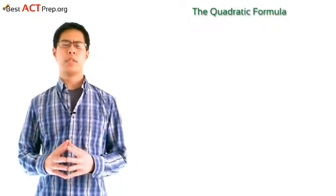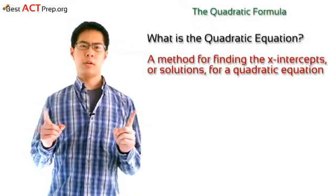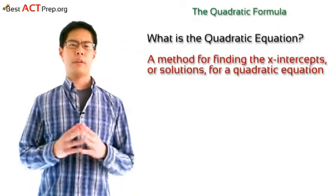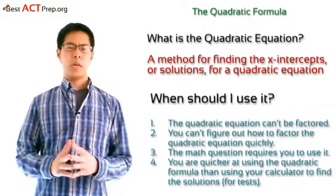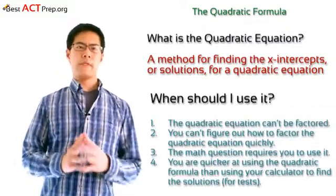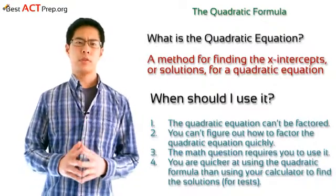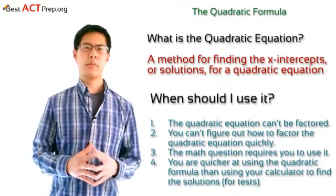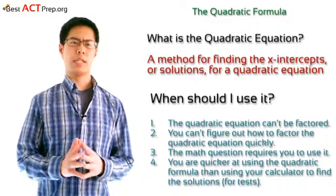So first, what is the quadratic formula and when should I use it? In short, the quadratic formula is a method for finding the x-intercepts or the solutions for a quadratic equation. You're going to use the quadratic formula in one of four situations. Number one, the quadratic equation can't be factored. Number two, you can't figure out how to factor the quadratic equation quickly. Number three, the math question requires you to use it. Or number four, you are quicker at using the quadratic formula than using your calculator to find the solutions — for time tests, that is.